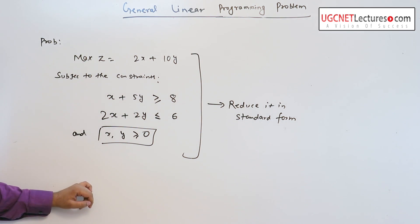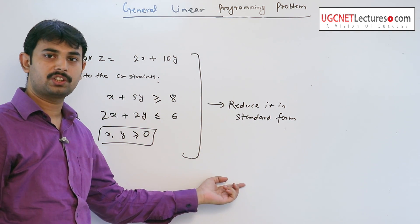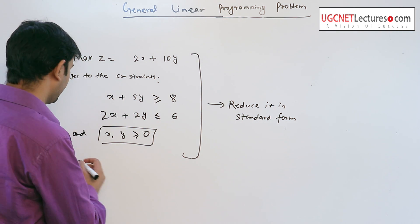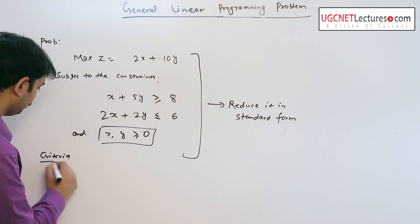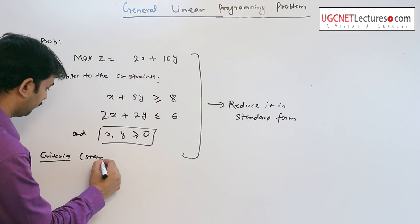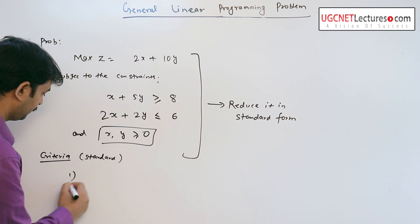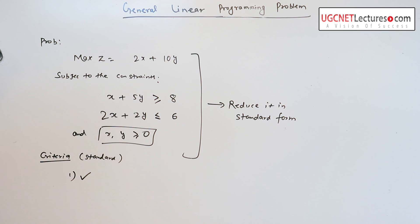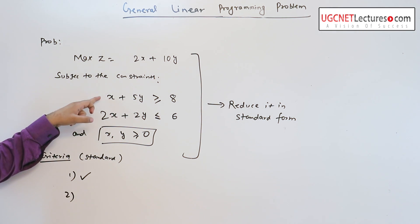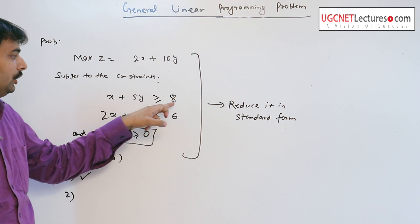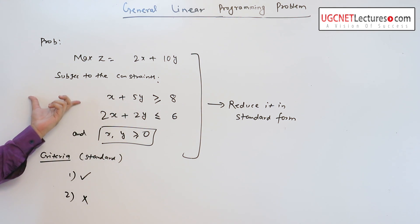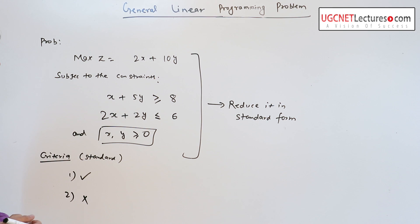We know the criteria of standard form. The first criteria — the objective function is of maximization type — is satisfied. The second criteria — all the constraints are of equality type — is not satisfied. So, how do we reduce this problem to its standard form?